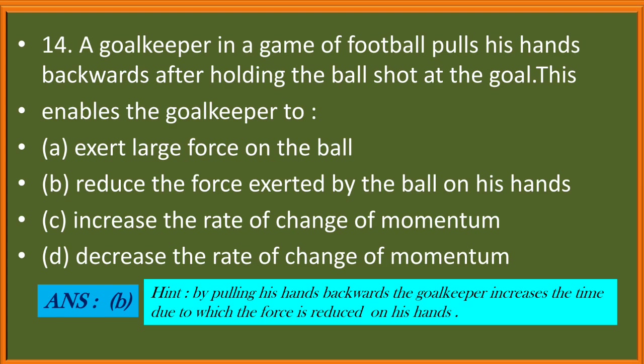Question 14. A goalkeeper in a game of football pulls his hands backwards after holding the ball shot at the goal. This enables the goalkeeper to: option A, exert large force on the ball; option B, reduce the force exerted by the ball on his hands; option C, increase the rate of change of momentum; option D, decrease the rate of change of momentum. By pulling his hands backwards the goalkeeper increases the time due to which the force is reduced on his hands. So the correct answer will be option B.